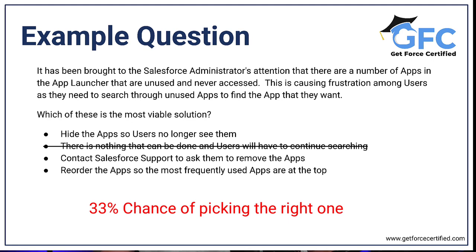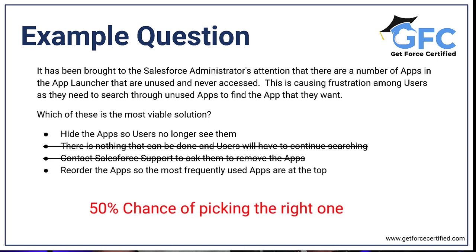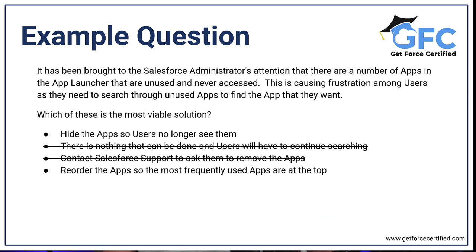We also know that as a Salesforce administrator, we have the functionality to configure the org to fulfill this requirement, which means that we can rule out answer number three. We're now only left with two answers, and that means we have a 50% chance of picking the right one, even if we didn't know the correct answer. That means that we've doubled our chances from when we first began.